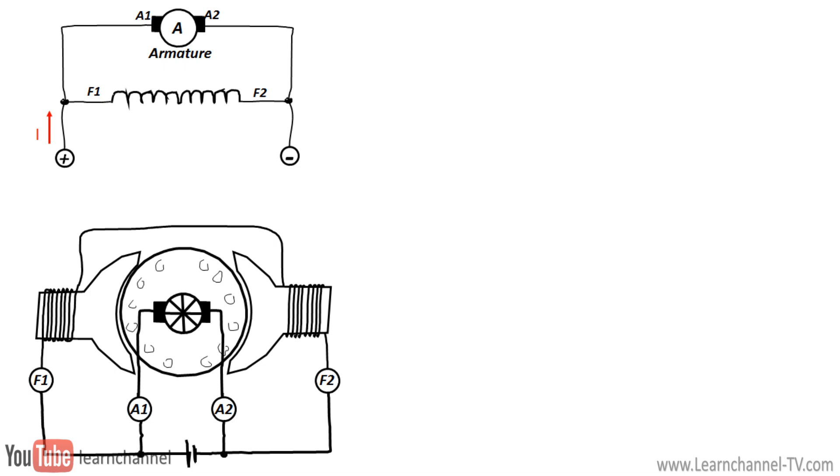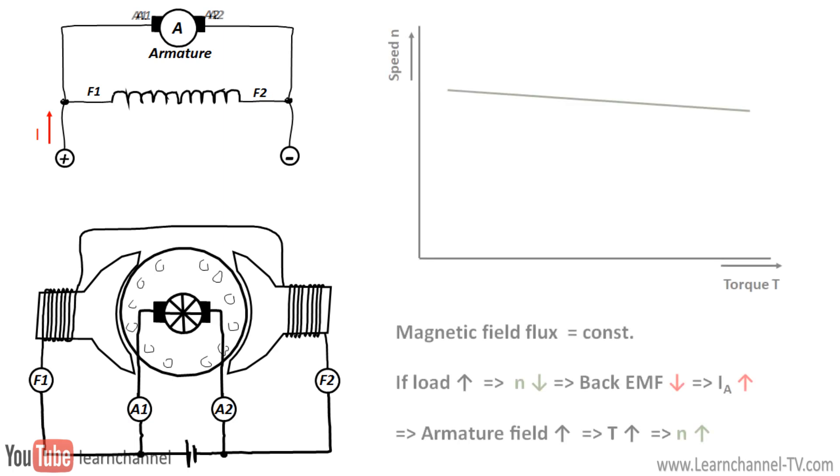As we know, the rotating armature produces a back EMF, which opposes the armature voltage and therefore reduces the armature current. If the load on the motor increases, the armature rotation slows, and thus the back EMF also is reduced, since back EMF is proportional to speed. The decrease in back EMF results in an increase in armature current. Since torque is proportional to armature current, torque must also increase.